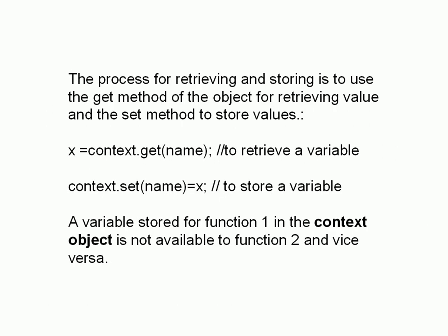The process of retrieving and storing data is to use the GET method for retrieving the value and the SET method for storing the value. Here we're looking at the context object — to retrieve data we use the GET method and to store data into the context object we use the SET method. The flow object and the global object both have GET methods and SET methods as well.